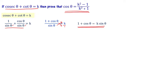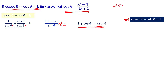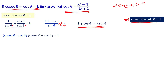Let us quickly recall the trigonometric identity relating cosec theta and cot theta: cosec squared theta minus cot squared theta equals 1. This can be factored as cosec theta plus cot theta times cosec theta minus cot theta equals 1.